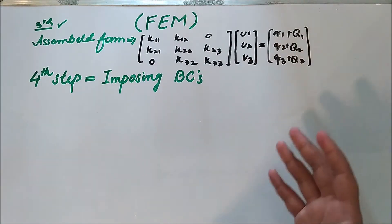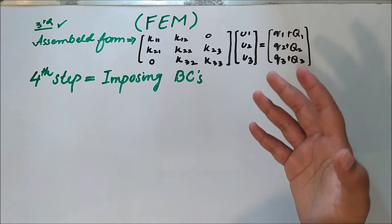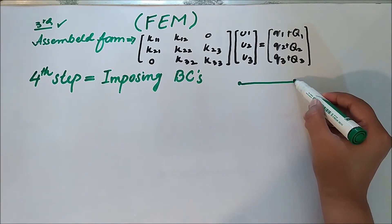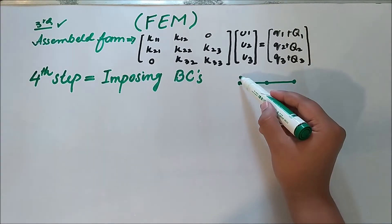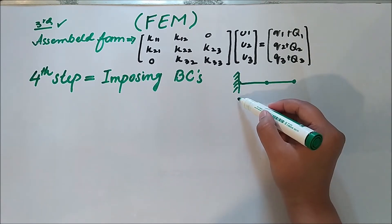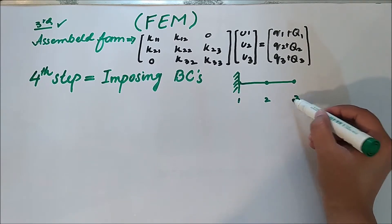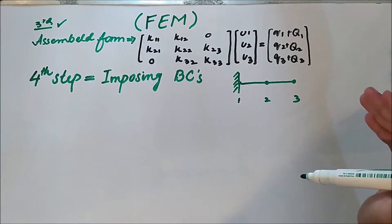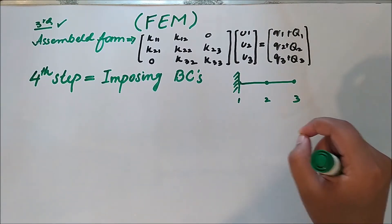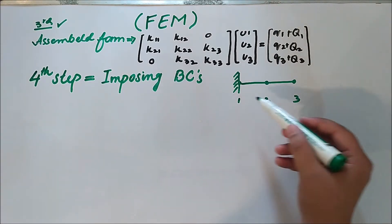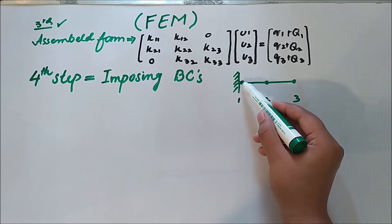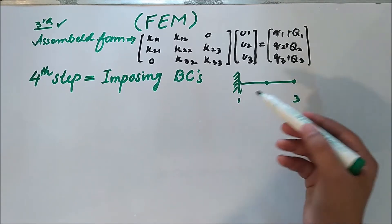The fourth step is imposing the boundary conditions that will be in the system or in a certain domain. Let's suppose the bar we are dealing with is a linear bar with three nodes, fixed from one end. This is the first node, this is the second node, and this is the third node. We are in the global system right now. This bar is fixed at the first end, so the displacement of that end would be zero.